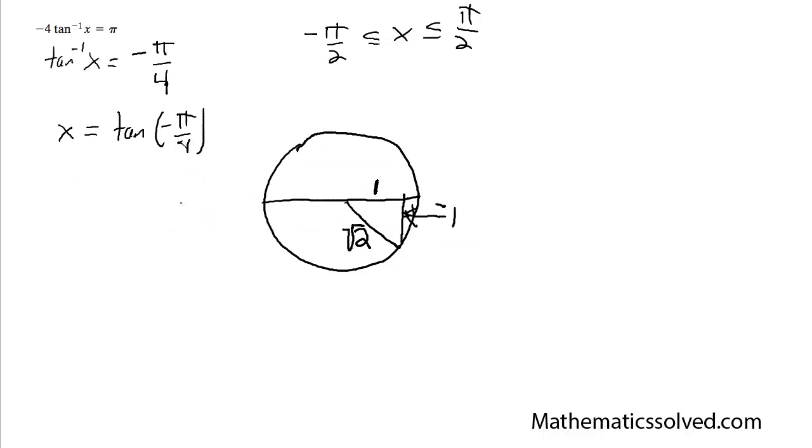So tangent of negative pi over 4 is going to be y over x, which is just negative 1 over 1. Which is just negative 1. And this is our solution.